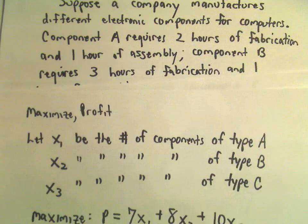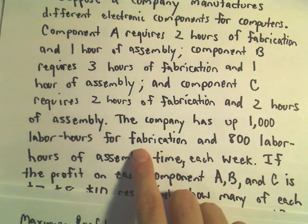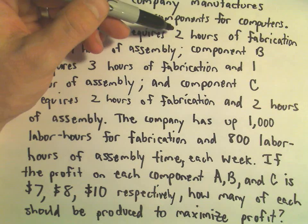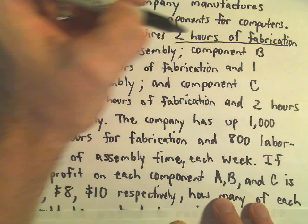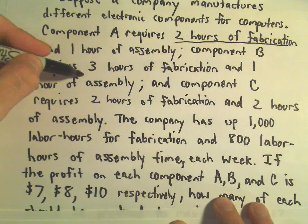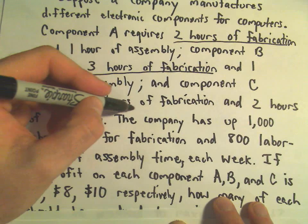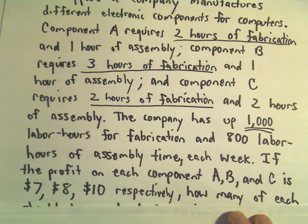For fabrication, we have 1,000 labor hours. Component A takes 2 hours of fabrication, component B takes 3 hours of fabrication, and C takes 2 hours of fabrication. We've got 1,000 hours to spend on this process.